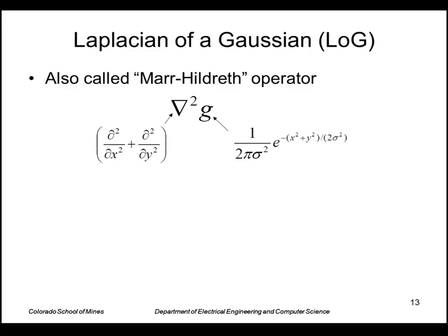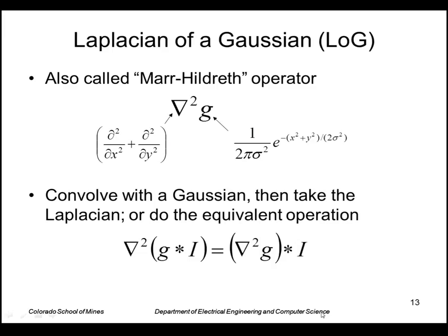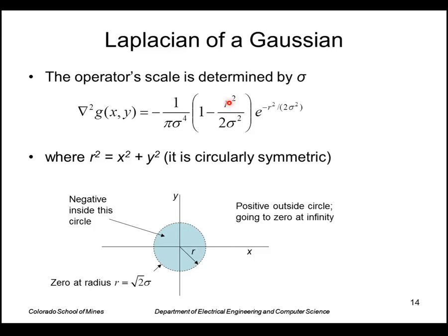So to make an edge operator from the Gaussian, we can take the Laplacian of a Gaussian. This is also called the Marr-Hildreth operator. The idea is we convolve the Gaussian with the image and take the Laplacian, or equivalently take a Laplacian of a Gaussian and convolve that with the image. So taking this expression and actually performing the derivatives yields this expression.